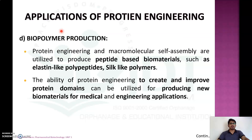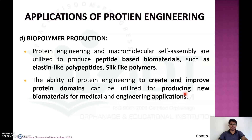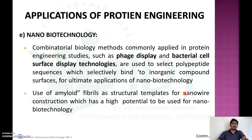The next application is biopolymer production. Protein engineering can be used in combination with macromolecular cell self-assembly for the utilization of peptide-based biomaterials such as elastin-like polypeptides and silk-like polymers. The ability of protein engineering to create and improve protein domains can be utilized for producing new biomaterials for both medical and engineering applications.